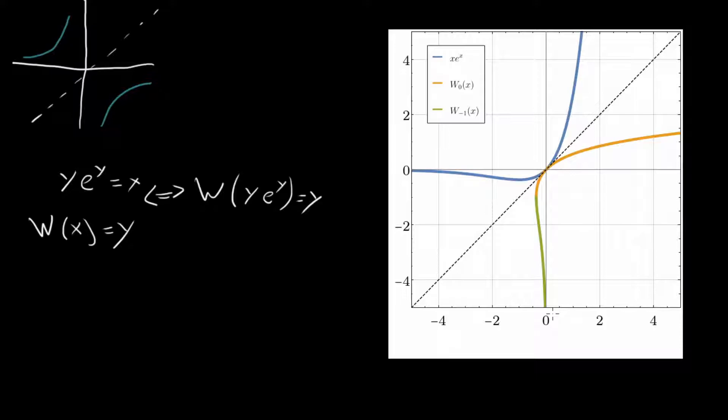And really, there's actually, you can generalize this to some W sub 1, W sub minus 2, stuff like that. It comes from branch cuts and complex analysis. But I don't want to go too much into that in this video. The point here is just that because this function x e to the x fails the horizontal line test, we get a Lambert W function which is multi-valued.